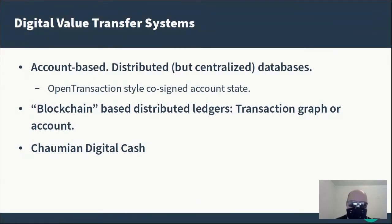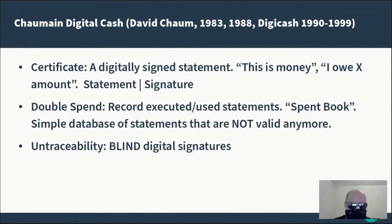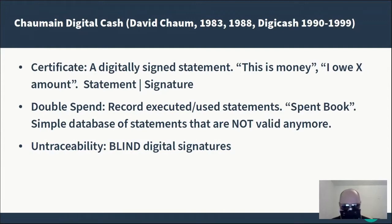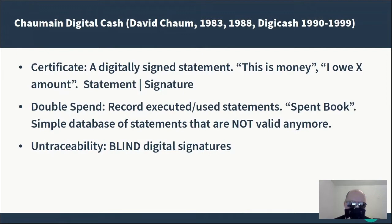But then there's a third thing — Chaumian digital cash, or digital bearer certificates. This technology is quite old; it was invented by Chaum and others in 1983 and refined in 1988. There was actually a company based on it called DigiCash, which operated until 1999. Chaumian digital cash is a certificate issued by an issuer, mint, or bank. It consists of two parts: a statement — like 'this is this much money' or 'I owe this person this much money' — and a signature of the issuer.